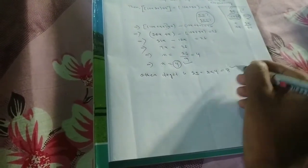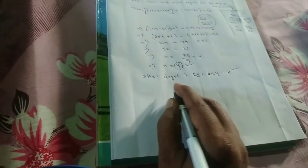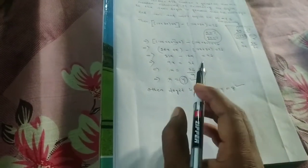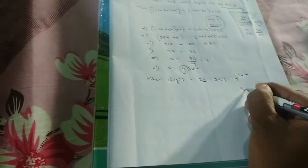So the two-digit number: the tens place digit is 8 and the units place digit is 4. That is our answer.